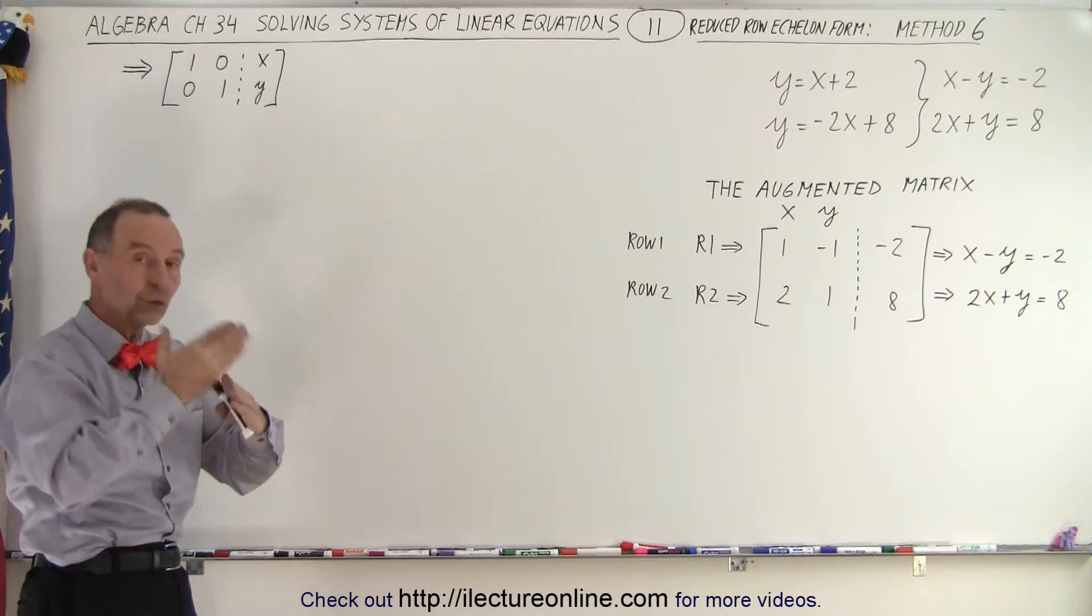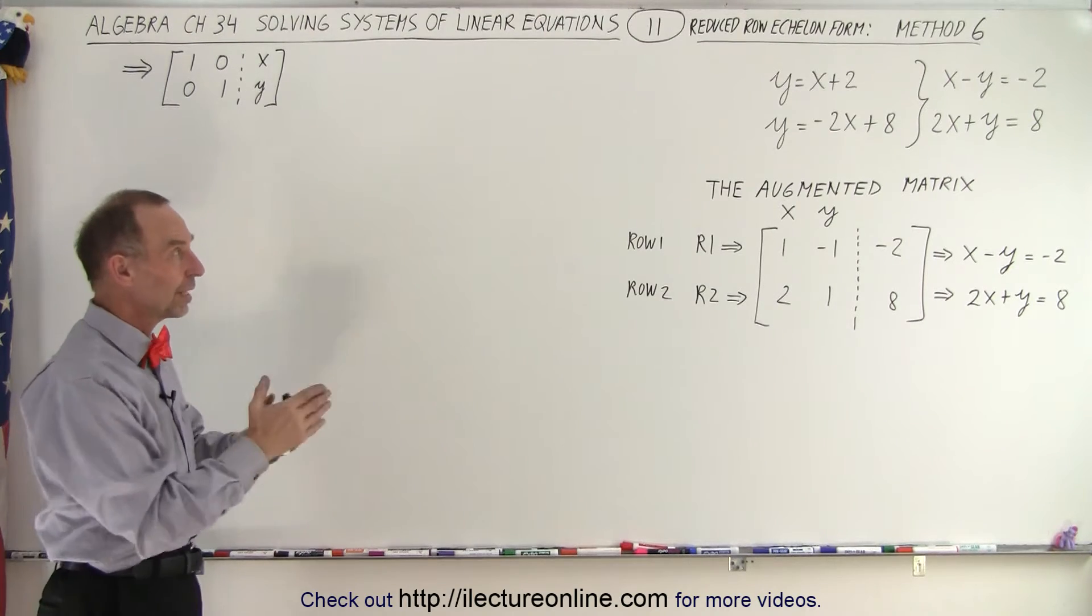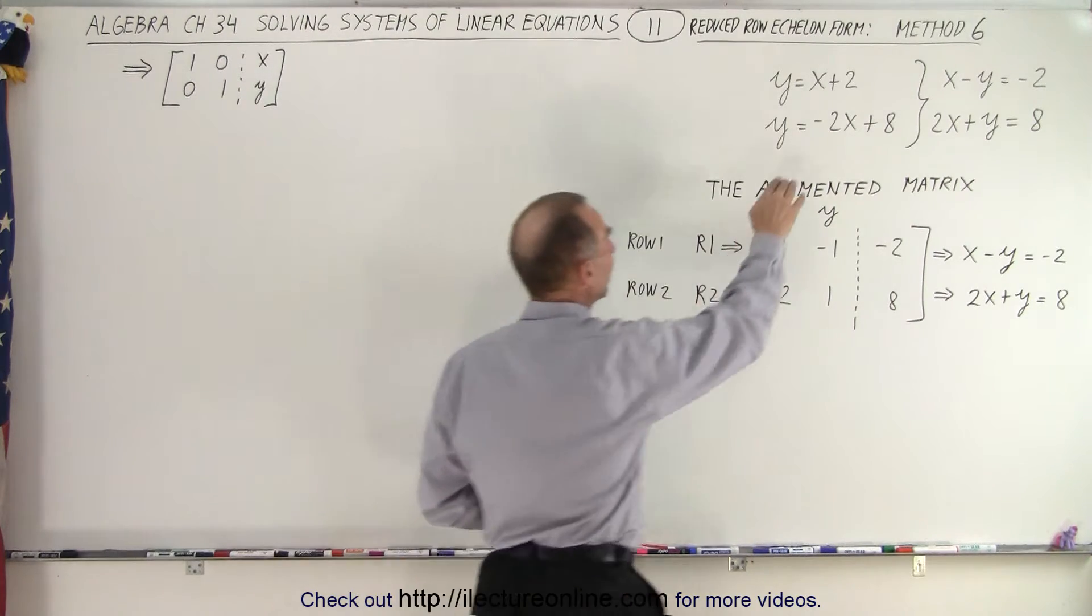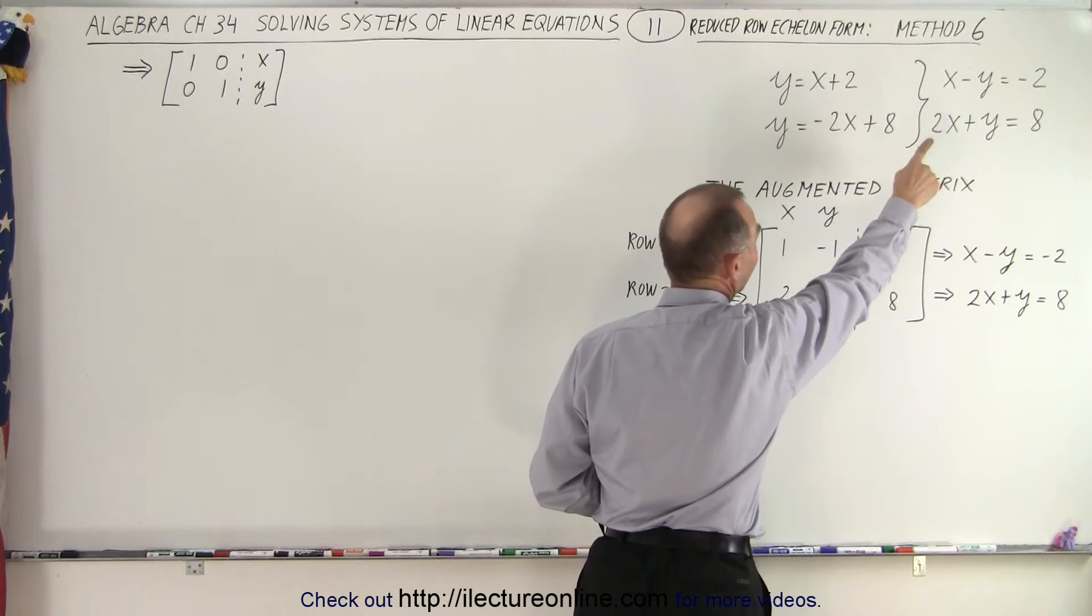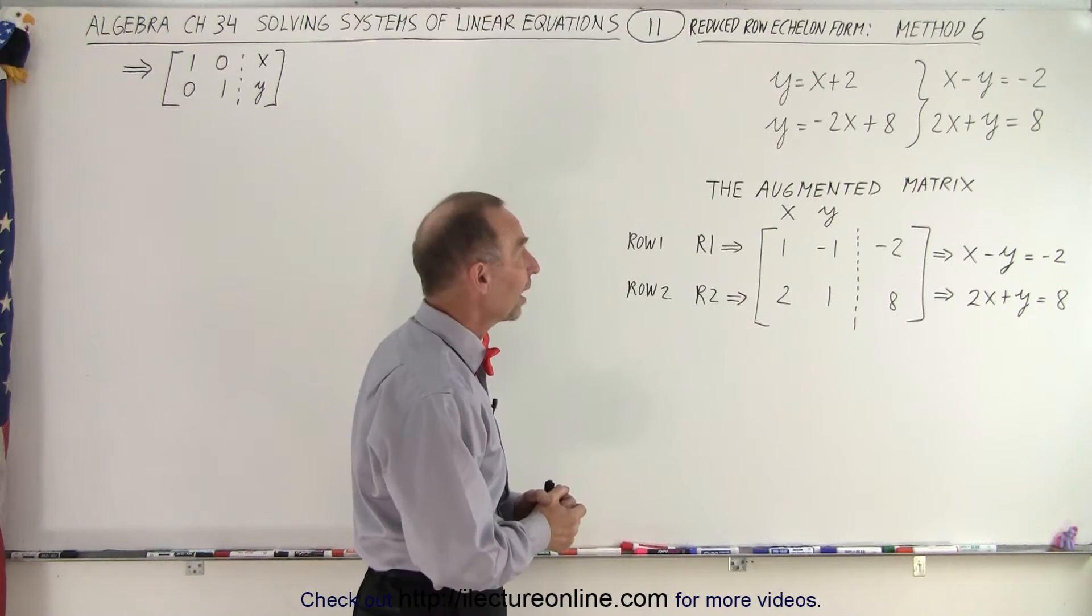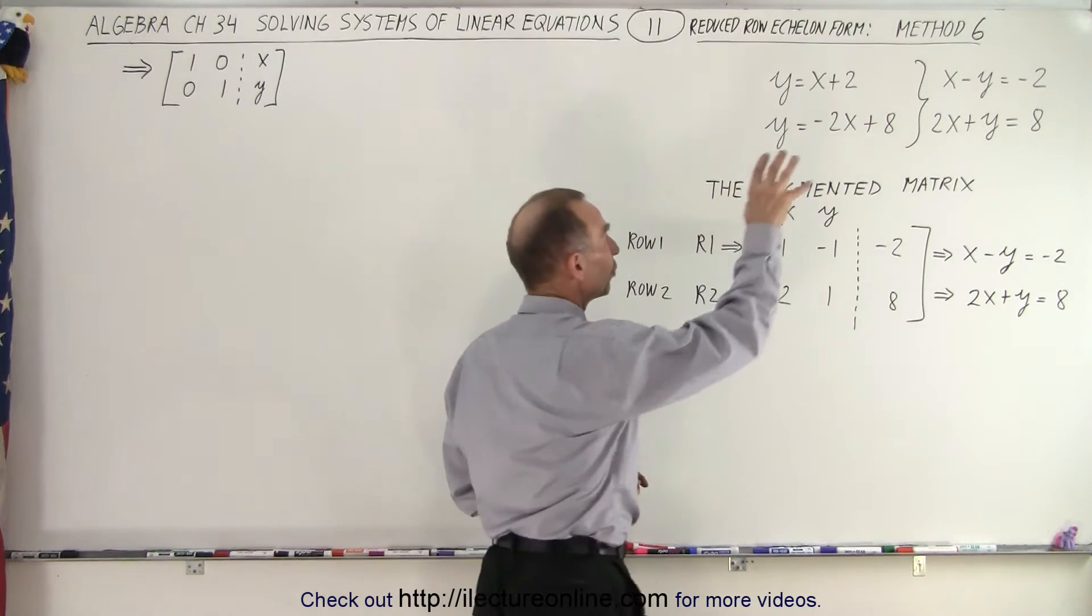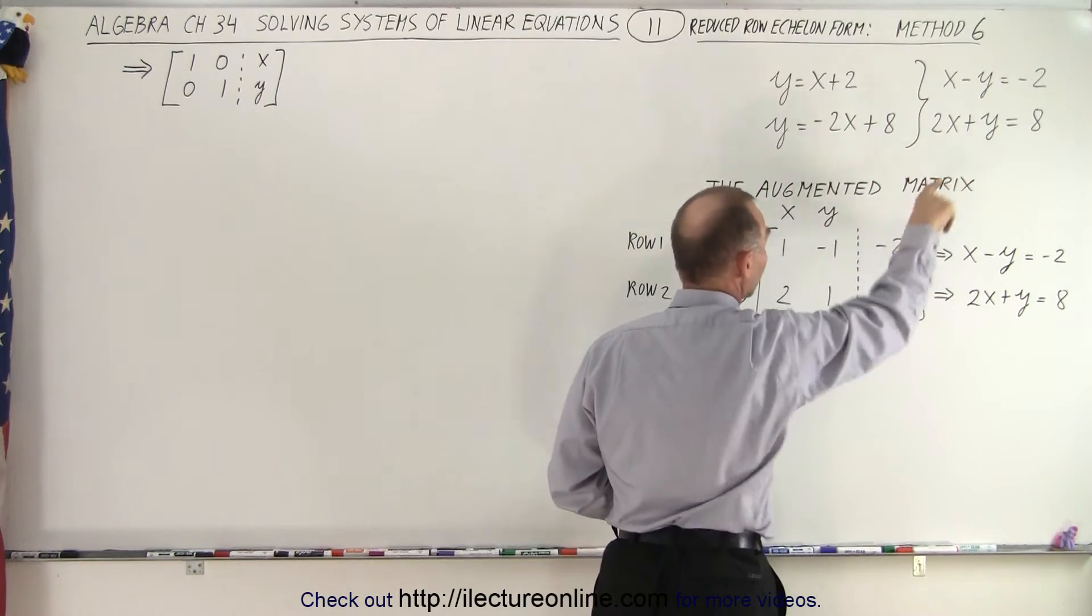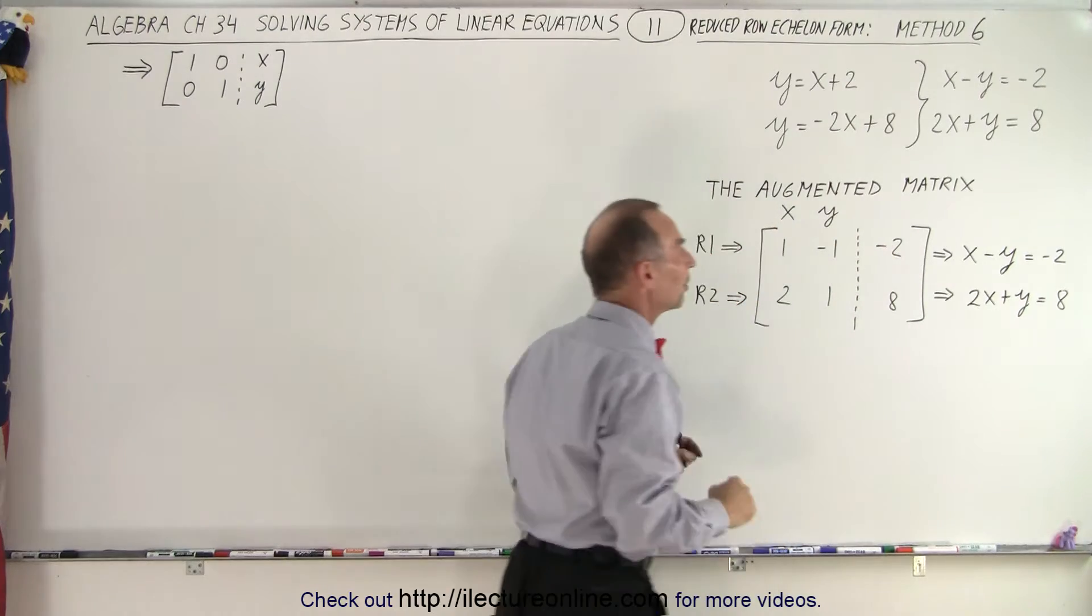The x and y coordinates where the two lines cross. We start with the same two equations. We first write them in standard form, where we have the x's and y's on the left side, the constants on the right side at the equal sign. Then we plug those coefficients and constants into the augmented matrix.